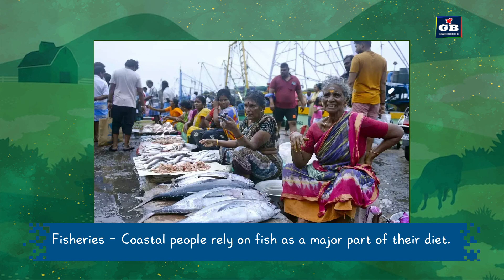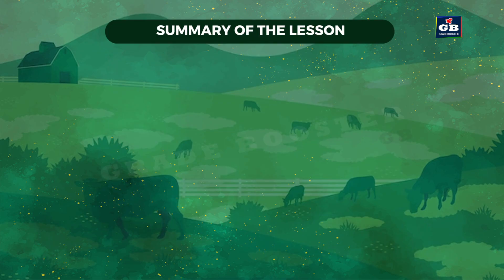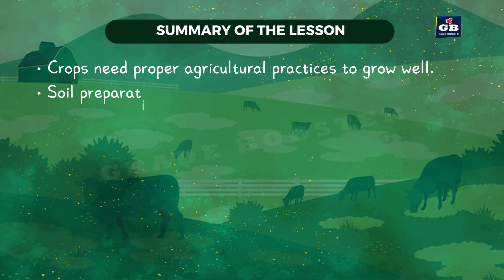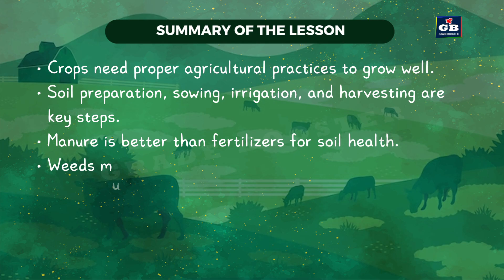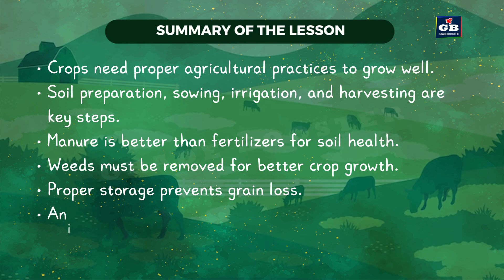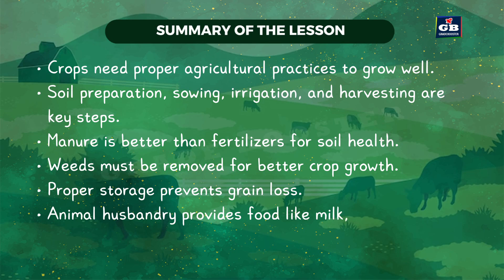Let us recap the important points of the lesson. Crops need proper agricultural practices to grow well. Soil preparation, sowing, irrigation, and harvesting are key steps. Manure is better than fertilizers for soil health. Weeds must be removed for better crop growth. Proper storage of grains prevents grain loss. Animal husbandry provides food like milk, eggs, and meat.